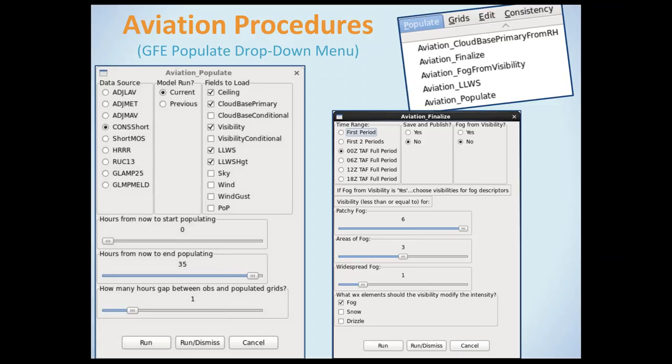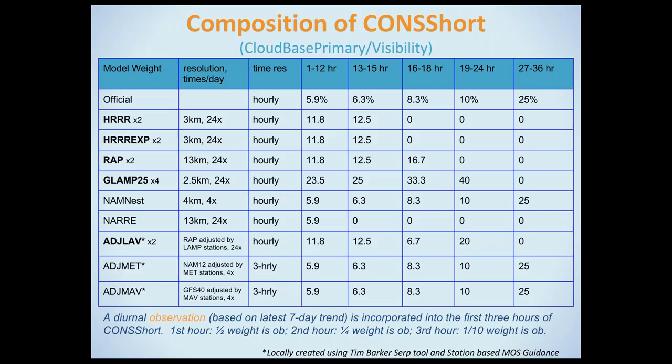There are background procedures lumped into your aviation populate and your aviation finalize. The real guts of all this are documented in an installation document available in a CR DOS toolbox on a Google shared drive. In your populate menu you'll find aviation tools, the primary ones all preceded by 'aviation.' CONSHORT is available for aviation weather elements — cloud-based primary and visibility. The weighting is a little different than your normal forecast grid, and it's all laid out in the slides and documentation.